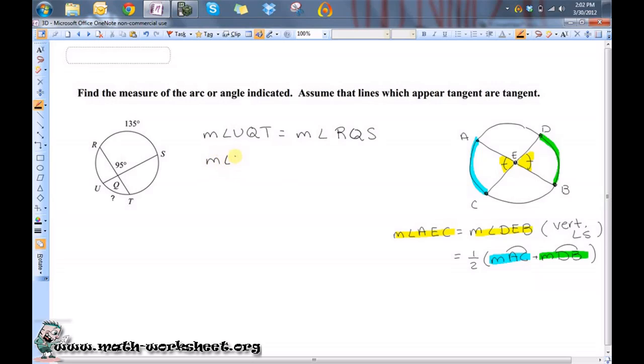So the measure of angle UQT is equal to 95 degrees, because these two are vertical angles.